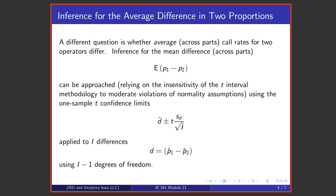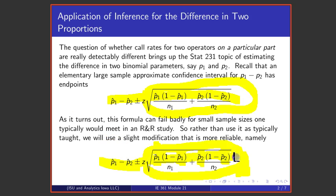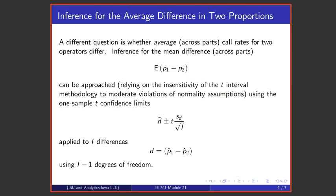Another point from elementary statistics answers a different question: whether across parts the 0/1 call rates for operators differ, rather than for a particular part. So these limits might be used to say whether operator 1 and operator 2 differ on their call rate for a particular part, whereas a different question is whether on average they differ across parts.